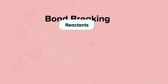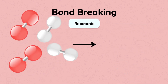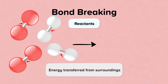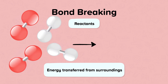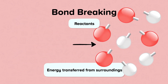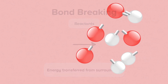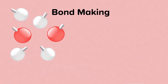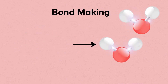An energy change is required for this to take place. When bonds break, energy is transferred from the surroundings because energy is required in order to break the bonds in the reactants. Energy is then transferred to the surroundings when bonds in the products are formed. The hydrogen and oxygen atoms form water molecules.